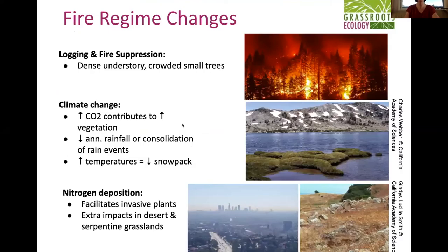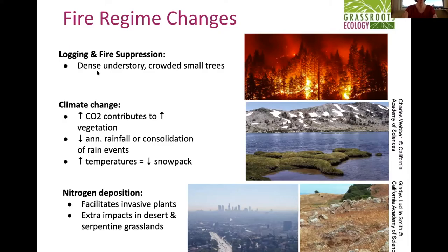Thinking about fire regime changes over the last few hundred years — a number of things have altered the natural patterns. One of the main things is fire suppression, which we're probably all somewhat familiar with. Logging also plays a role, because both those things tend to create dense understory and a homogeneous, same-age group of trees that are all fairly small in diameter growing together.